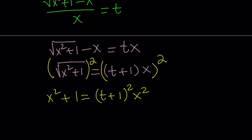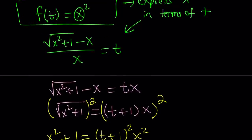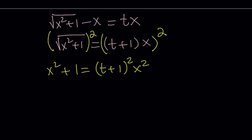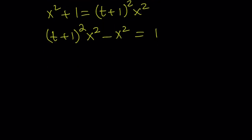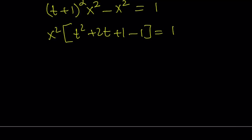Now I have x squared on both sides, and we're trying to express x squared in terms of t. From here, x squared is very easy to isolate. Subtract x squared from both sides and you get: t plus 1 squared times x squared minus x squared equals 1. Factor out x squared — inside the parentheses you have t squared plus 2t plus 1 minus 1. Cancel the 1s and divide both sides by t squared plus 2t. So x squared equals 1 over t squared plus 2t.